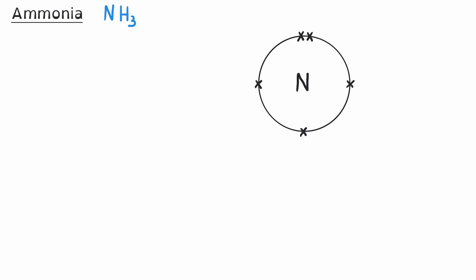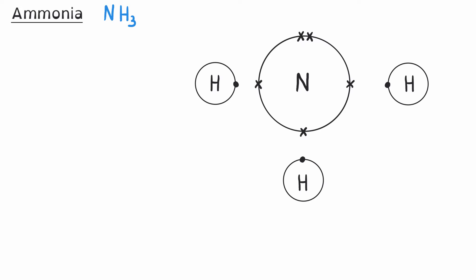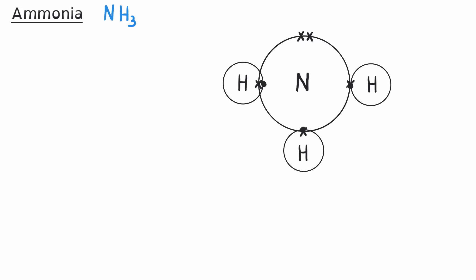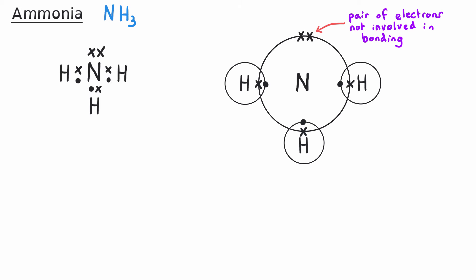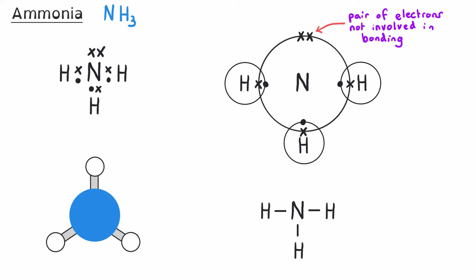In ammonia, the nitrogen atom has five electrons in its outer shell shown as crosses, and the three hydrogen atoms have one electron each shown as dots. When the three hydrogen atoms join to the nitrogen by separate covalent bonds, we get three shared pairs of electrons around the central nitrogen, giving it six shared electrons plus one non-bonding pair to reach eight. Each hydrogen gets the two electrons it needs. The displayed formula shows nitrogen in the center with three hydrogen atoms — typically two horizontal and one vertical going downward. The ball and stick diagram shows the blue nitrogen atom connected to three hydrogen atoms by three sticks.